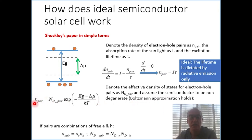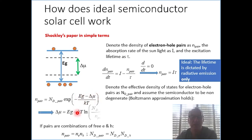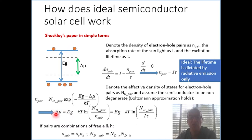We can really link the charge density, the density of states, and the electrochemical potential through the band gap. And from this we can really derive the electrochemical potential, which would be the maximum we can expect to get from this device — which is the band gap minus a logarithmic term.